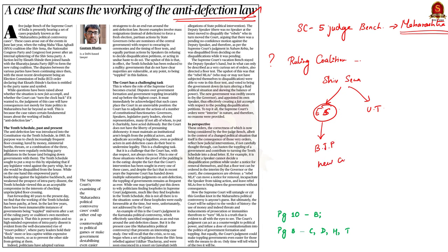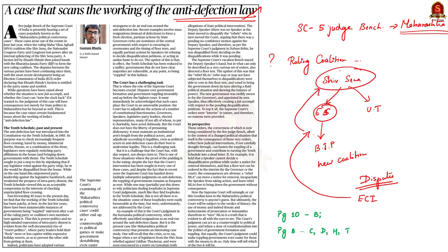After this event, disputes arose between various political parties in Maharashtra. Recently, the Election Commission of India declared that Shinde's faction is entitled to the party name Shiv Sena and the party symbol. The faction led by Uddhav Thackeray objected to this order, approached the Supreme Court, and raised certain issues about the working of India's anti-defection law. This is why the anti-defection law made news today.